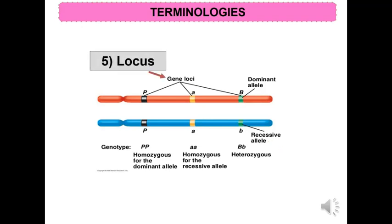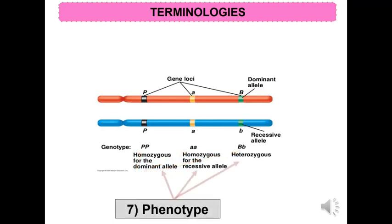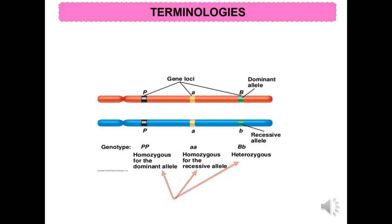A locus is a specific location of a gene on a chromosome that controls specific traits. Genotype is the particular genetic constituent of an individual, whereas phenotype is the physical characteristic or physical appearance determined by the genotype.